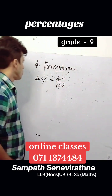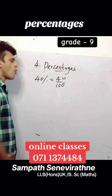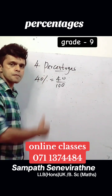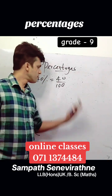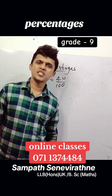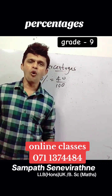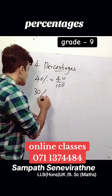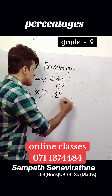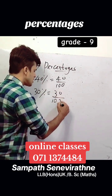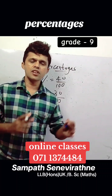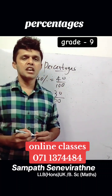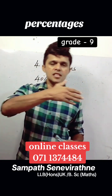What is a percentage? For example, 40% means 40 over 100. Similarly, 30% means 30 over 100. When you write a given value out of 100, we say that that is a percentage.